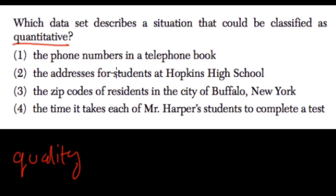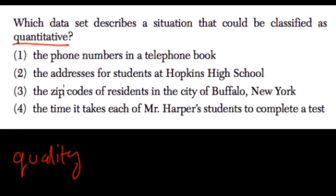The addresses for students — addresses use numbers, but you can't really say someone's address is greater than the others. It could be further down the road, but not really quantitative per se. Zip codes — same thing, qualitative.